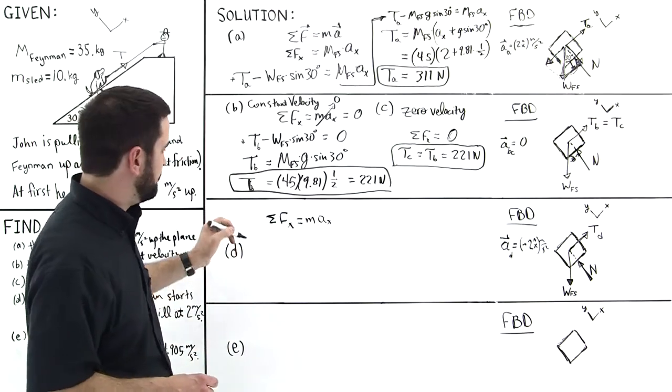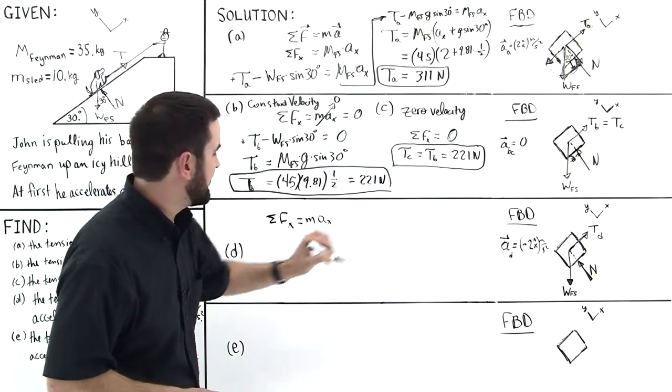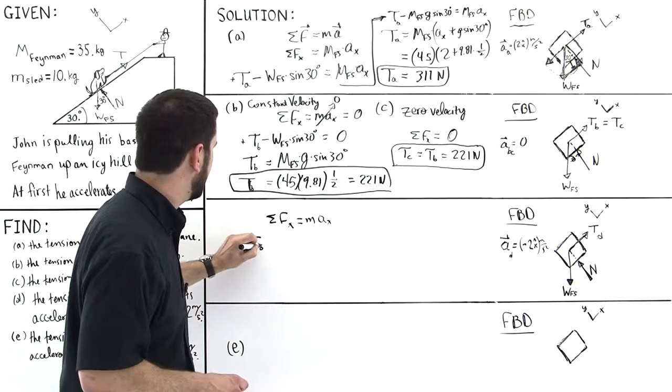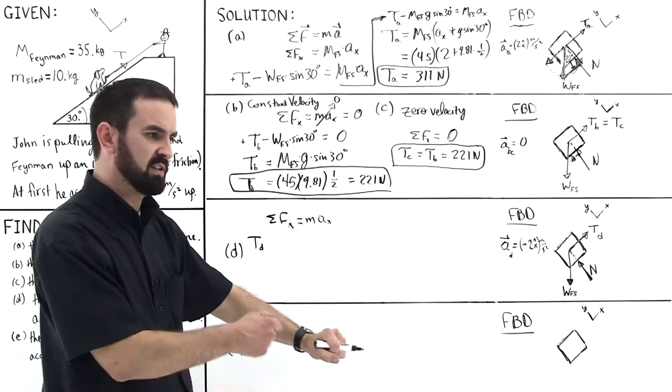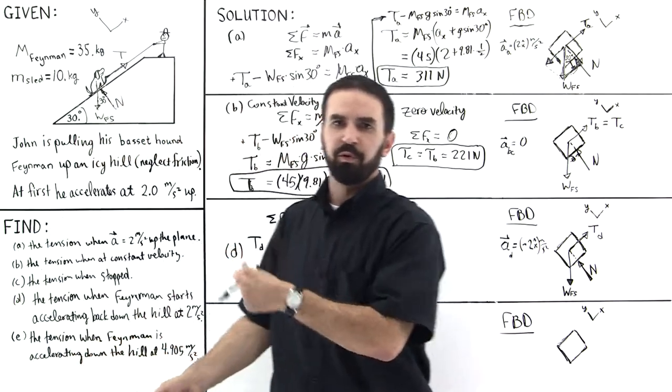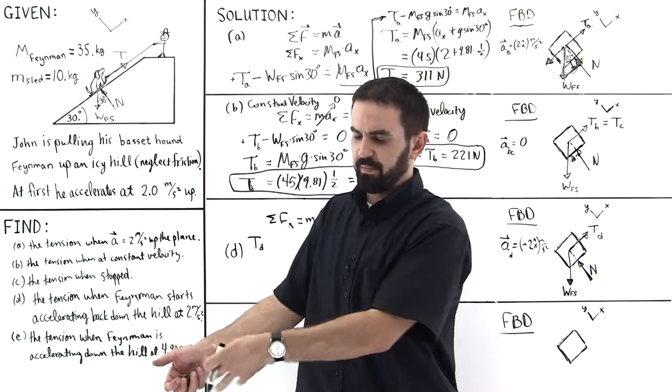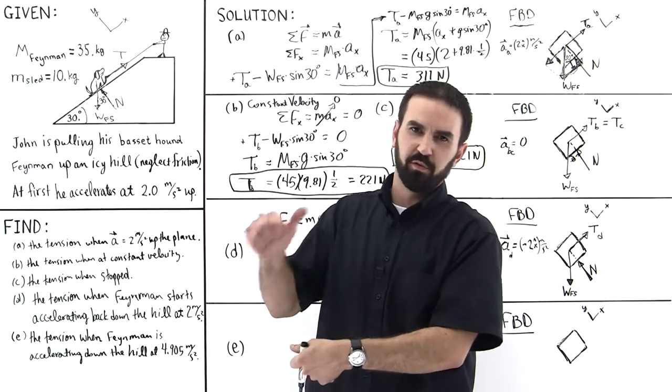And so then this will be T sub D, positive T sub D still. He's still exerting a force upward. The rope's slipping through his hands, but he's still exerting a force this way.